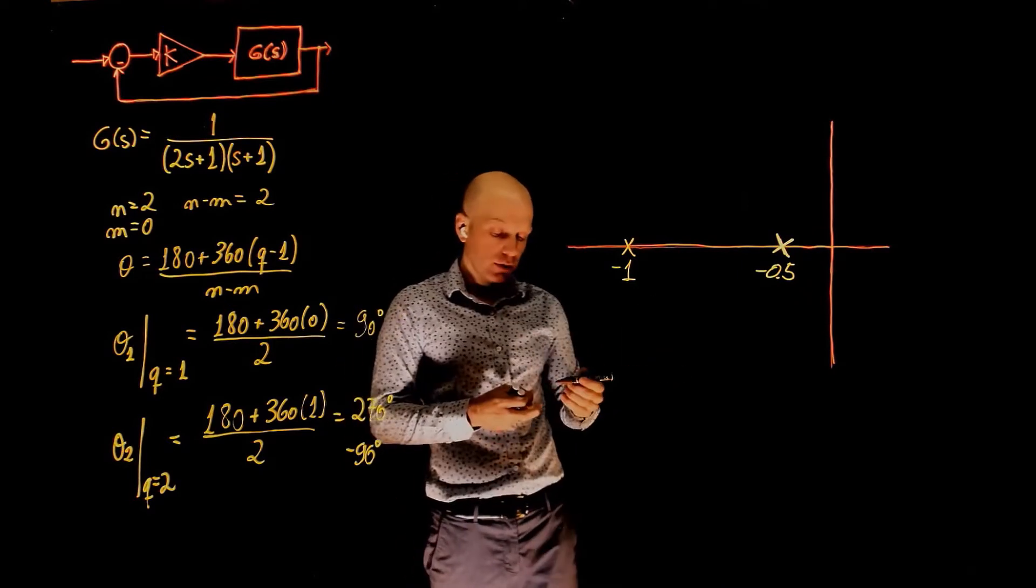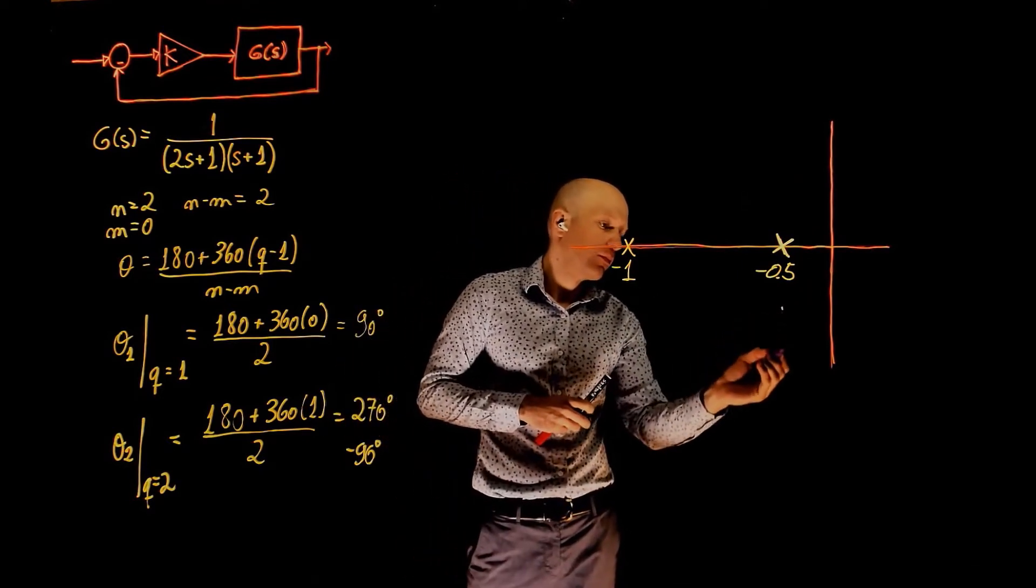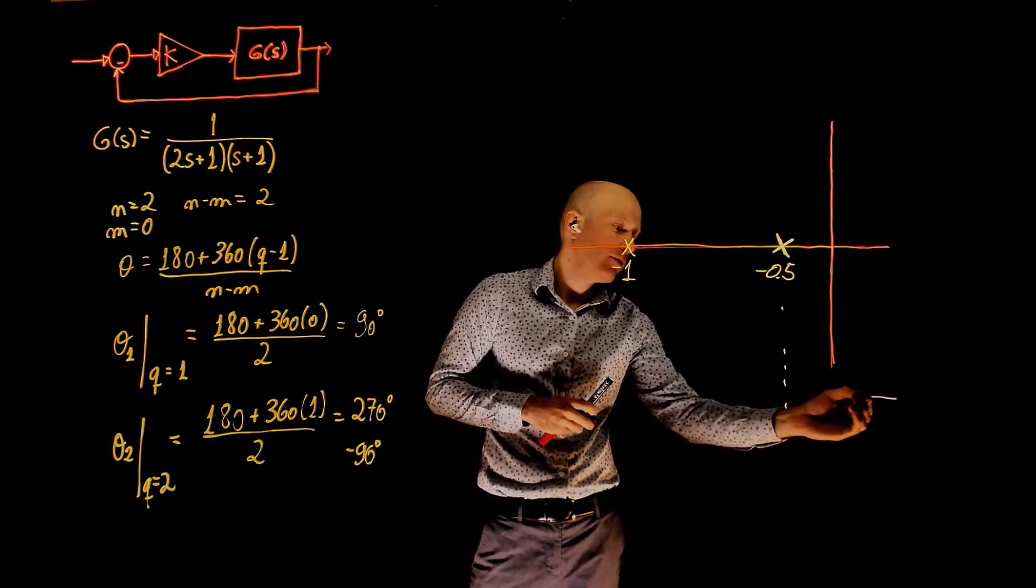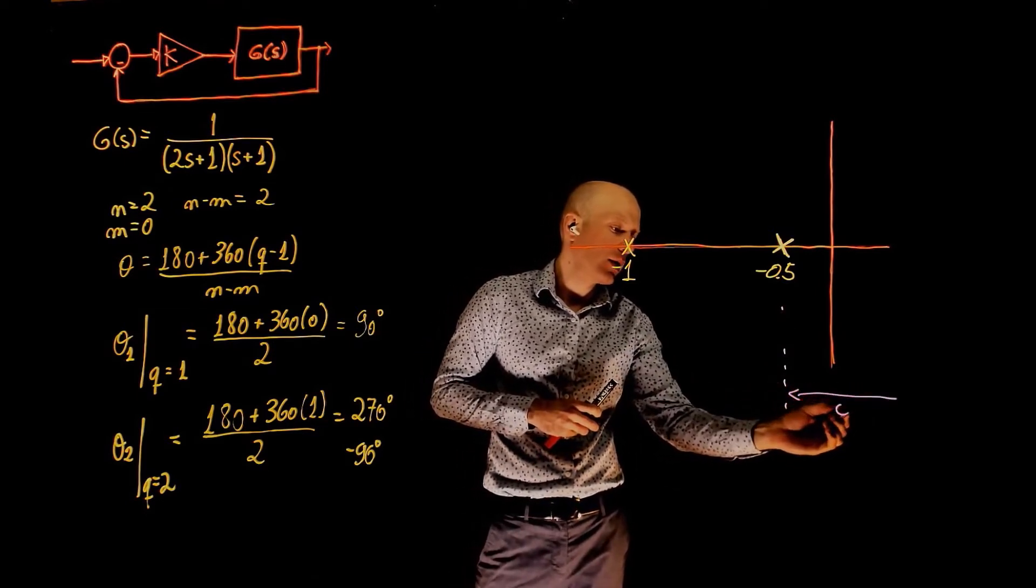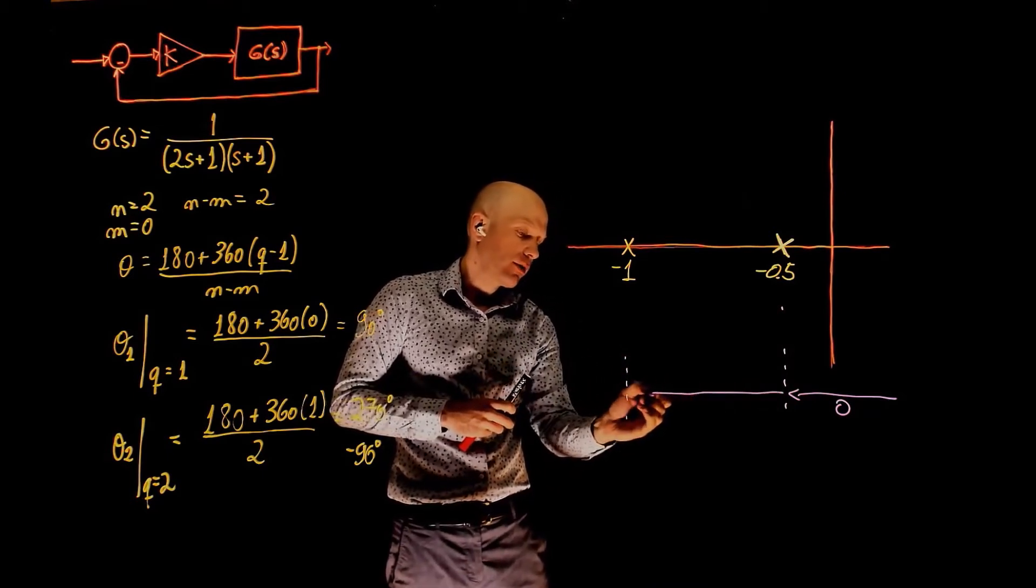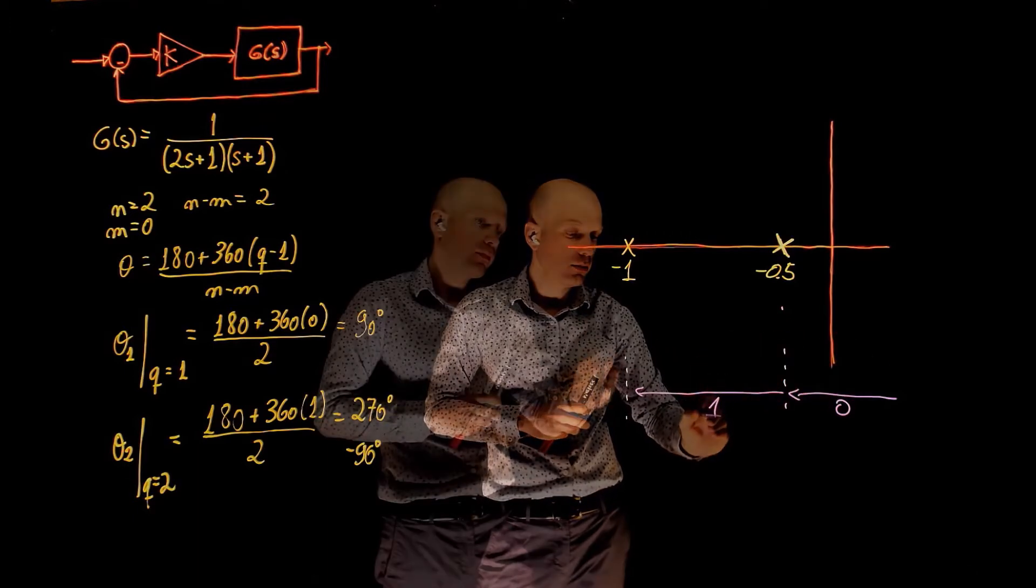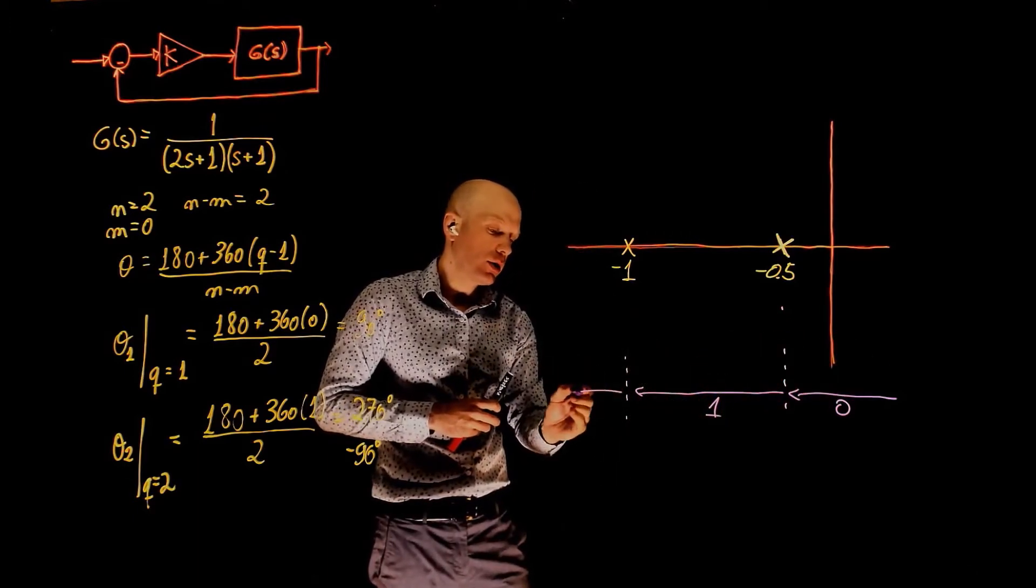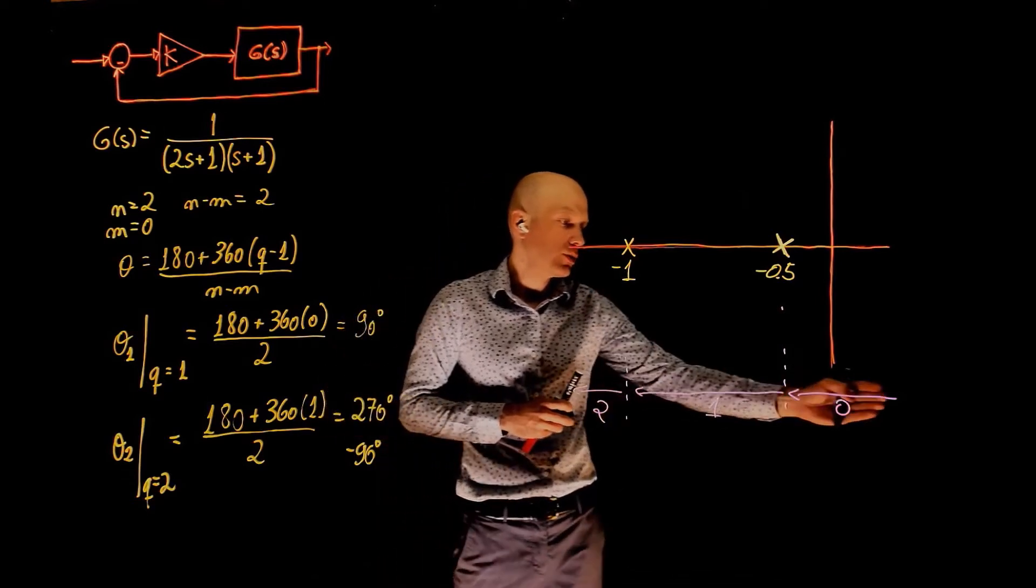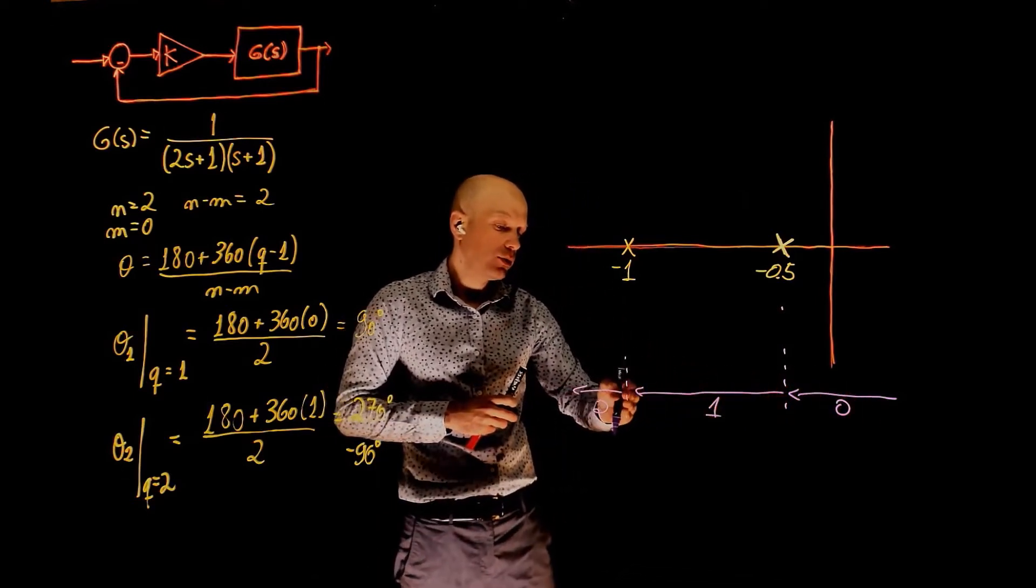We can now count the number of poles and zeros starting from positive infinity. We go from positive infinity up to 0.5, the count is 0. Past 0.5 it becomes 1. We've now counted one pole. And past negative 1 we go to 2. So 0 poles and zeros, 1 pole and 0, 2 poles and 0.